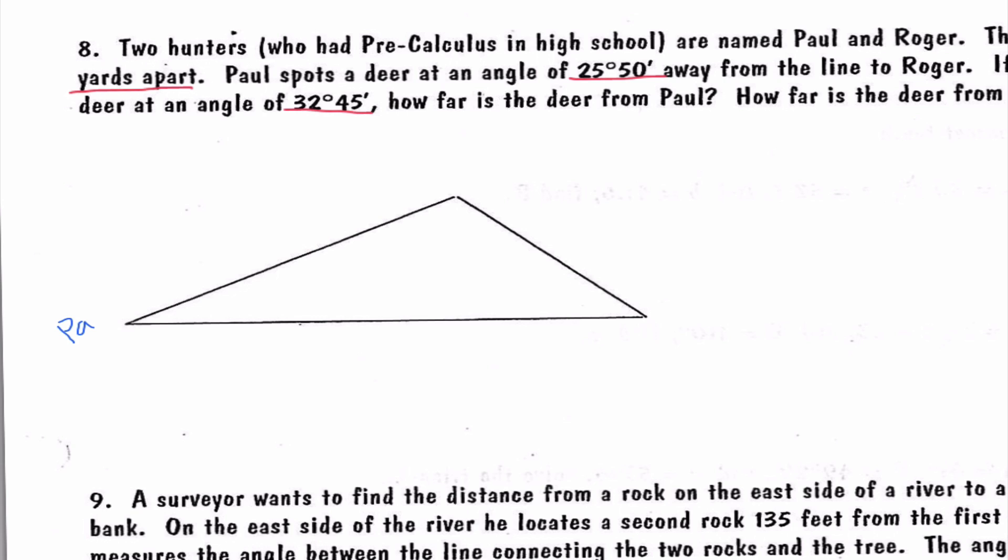I'm just going to say, okay, here's Paul, here's Roger, and here's the deer, because we know that all of these word problems should somehow end up in a triangle. Now the info that I highlighted, we know that they are 100 yards apart.